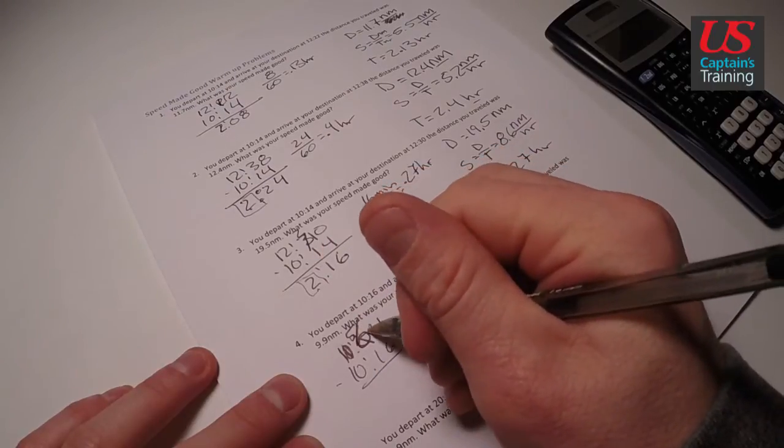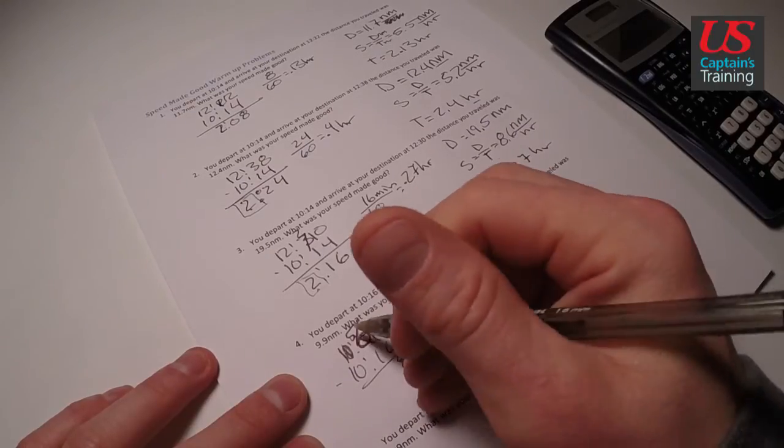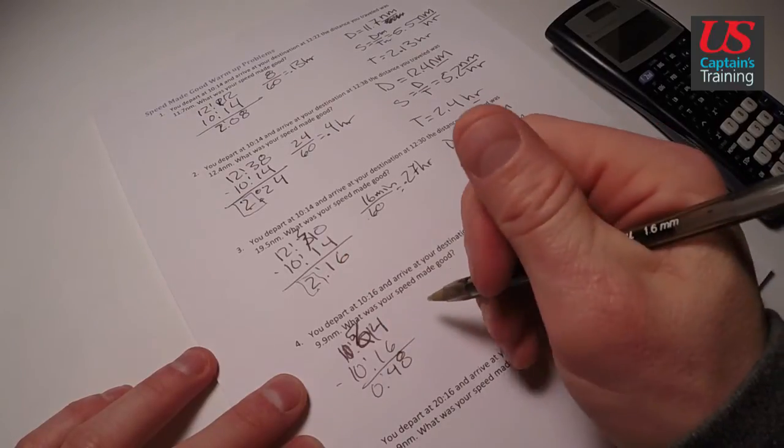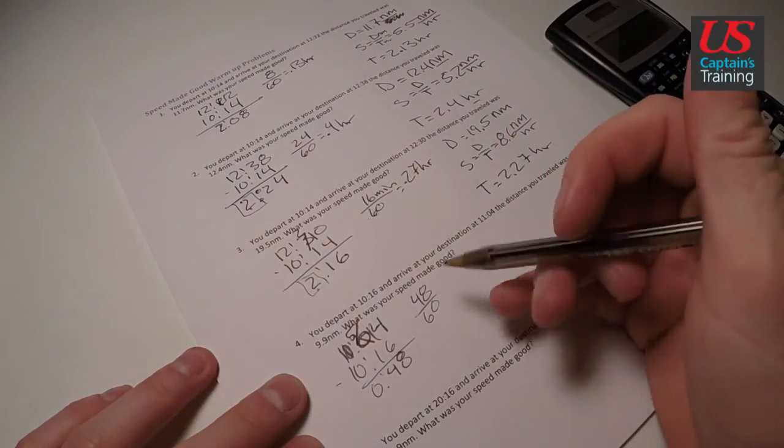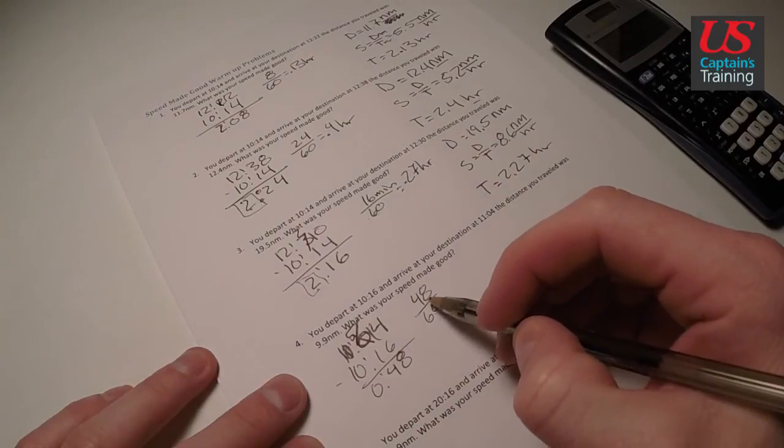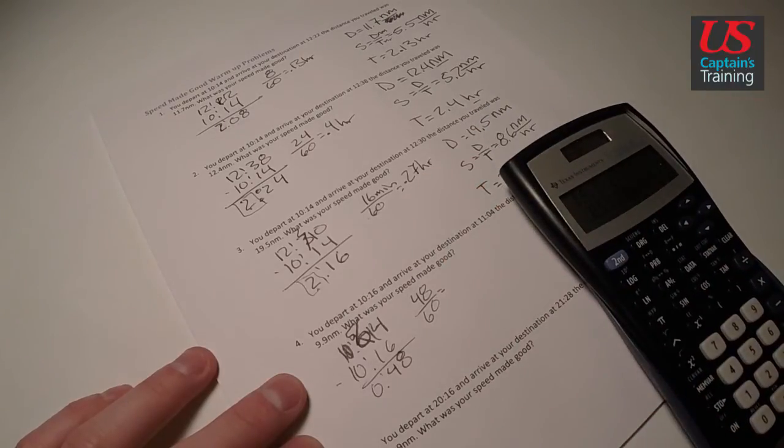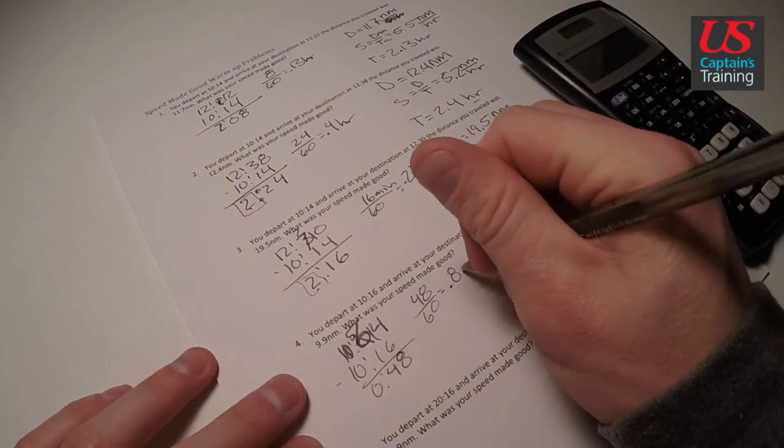Borrow a 10 here. 14 minus 6, this is 8. 5 minus 1 is 4. 10 minus 10 is 0. We're at 48 minutes. 48 minutes divided by 60. Now 45 minutes would be 0.75, and this is 48. So we're going to be just a little bit off of that. 48 divided by 60 equals 0.8 hours.